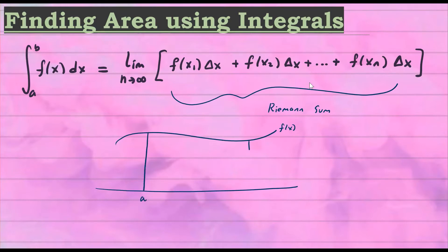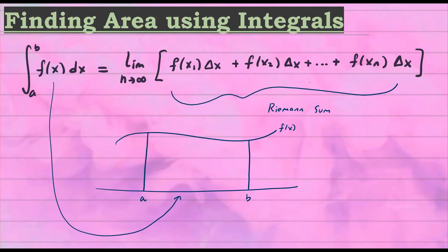So let's say this is a, and this is b. What this integral represents is the area underneath this curve — everything covered from a to b under the curve above the x-axis is what this definite integral is.